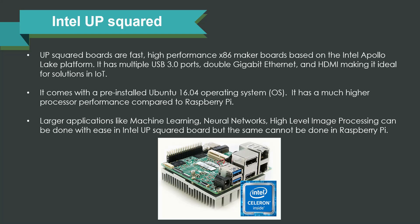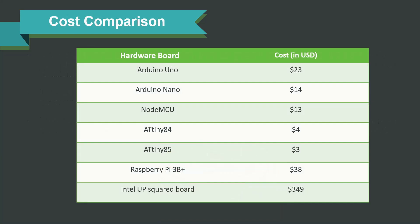The Intel UP2 board is ideal but is quite expensive. In terms of cost in USD: Arduino Uno costs $23, Arduino Nano costs $14, NodeMCU is $13, ATtiny84 is $4 and ATtiny85 is $3, Raspberry Pi 3B Plus costs $38, and the Intel UP2 board costs around $350. Based on the application you are building and your budget, you can select the best microcontroller or computing board that suits your needs.